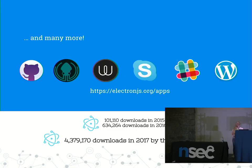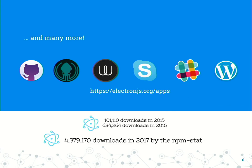Nevertheless, big names started to adopt the framework. There were already web applications by these companies, but then they came out with their own desktop applications. Tons of open source applications followed on GitHub, or on Electron's official site. In 2015, Electron had just over 100,000 downloads by NPM stats. By 2017, the download number was already over 4 million — you can see how fast the framework got popularized.